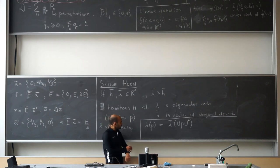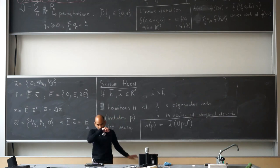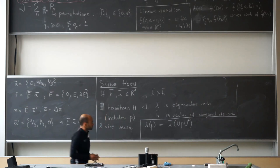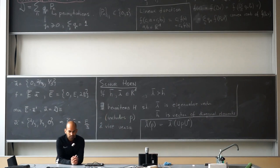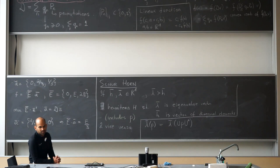I conclude the lecture. A student asks: why can we go the other direction — given a permutation matrix, we know it is majorized? The proof will be in the next lecture. The converse of this statement might not be immediately obvious here.